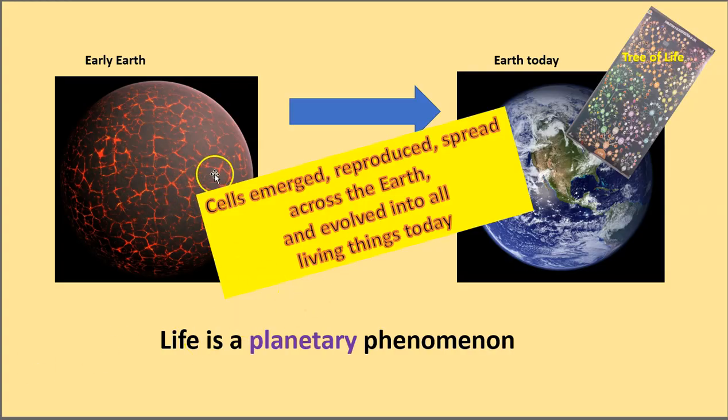So, what we have, then, is a lifeless rock produced life in the form of cells. Cells emerged, they reproduced, they spread across the Earth, and evolved into all living things today. Here's our tree of life. And we think of life as a planetary phenomenon. Of course, it could happen on a moon or whatnot. But there have to be ideal conditions for chemistry to take place under just the right circumstances to form that self-sustaining chemical system capable of Darwinian evolution.